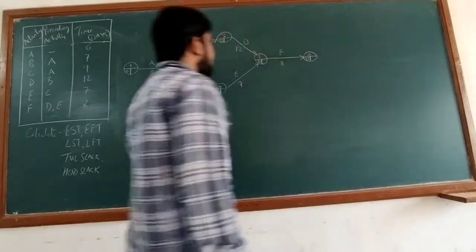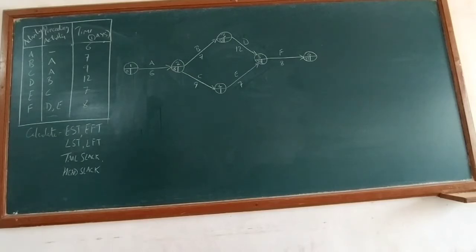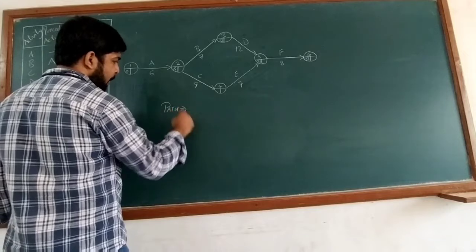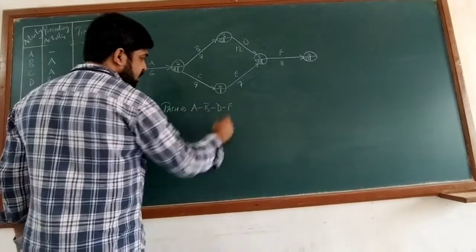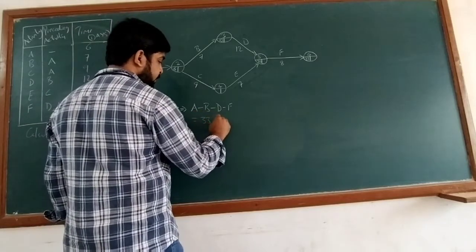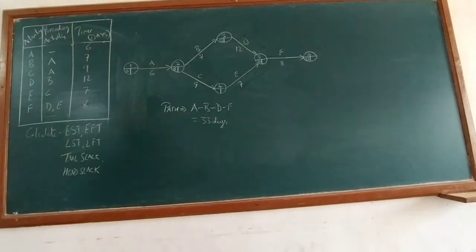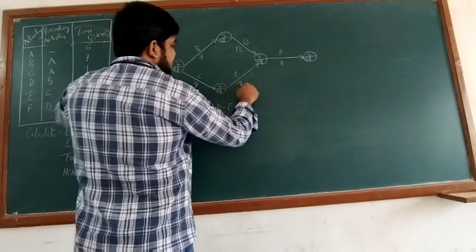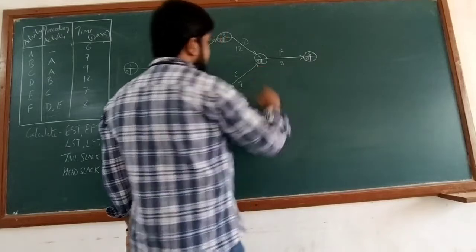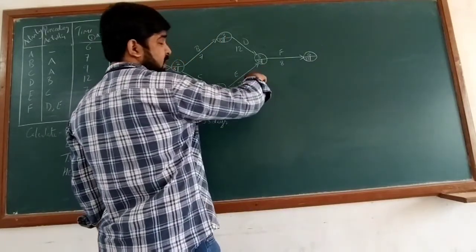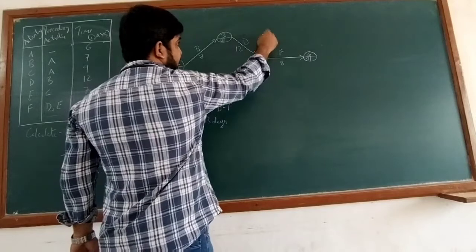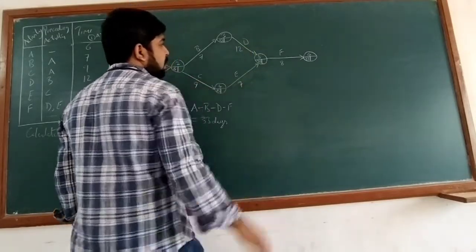So along path A-B-D-F we require 33 days. For the next path: 0 plus 6 gives 6, and 6 plus 9 gives 15 at node 4. Then 15 plus 7 gives 22. However, at node 5 we have both 25 (from path A-B-D) and 22 (from path A-C-E), so we take the larger value, which is 25. Then 25 plus 8 again gives 33.